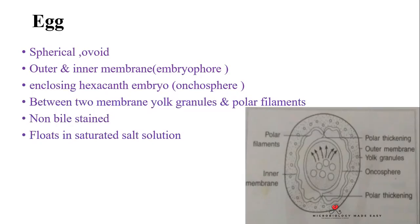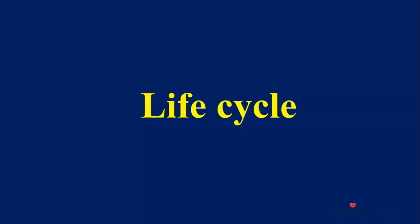Regarding the life cycle — when you observe it, Hymenolepis nana completes its life cycle in only one host, which is man. There is only one definitive host and no intermediate host or accidental host.